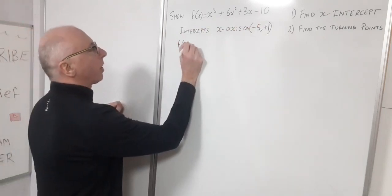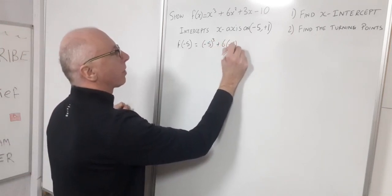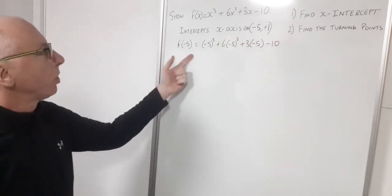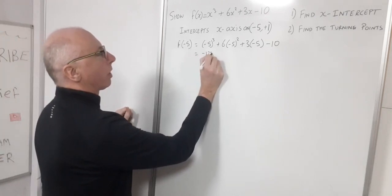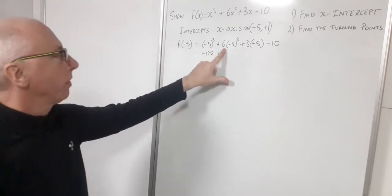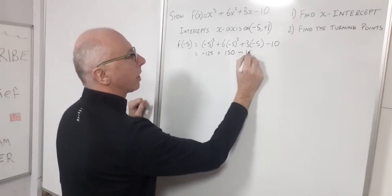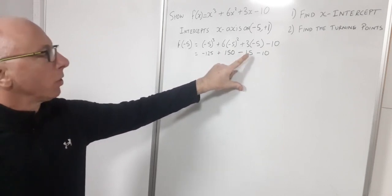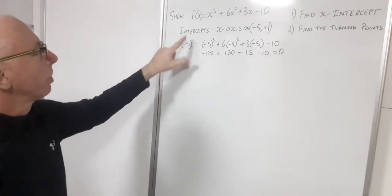So f of minus 5 — let's try that one first. We've got minus 5 cubed plus 6 times minus 5 squared plus 3 times minus 5 minus 10, substituting x equals minus 5 into our cubic. Minus 5 cubed is minus 125. 6 times minus 5 squared: minus 5 squared is 25, so 6 times 25 is 150. Then 3 times minus 5 is minus 15. So minus 125 minus 15 is minus 140, minus 10 is minus 150, and plus 150 gives us 0. So minus 5 is a solution to this cubic.